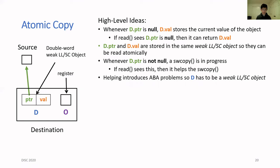What are the high-level ideas? The first one is we'll guarantee that whenever the pointer field of D is null, then the value field will store the current value of the object. This means that if a read operation sees a null pointer field, then it can immediately return the value field. In order for this to work, the read operation has to be able to view the value field and the pointer field atomically, which is why we store them in the same double-word LL/SC object.